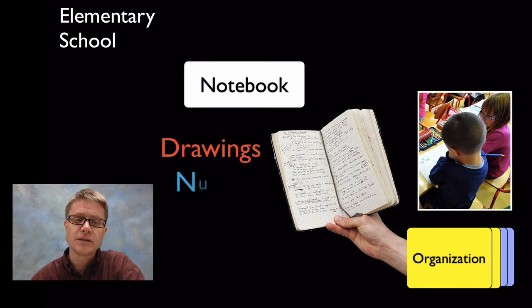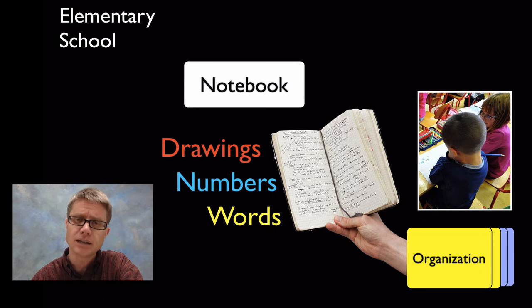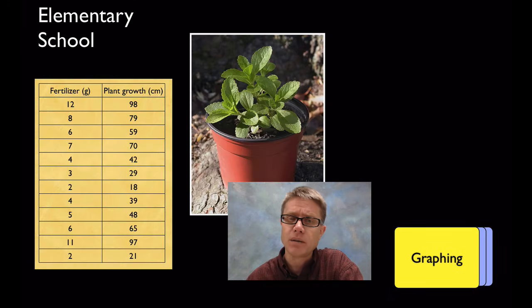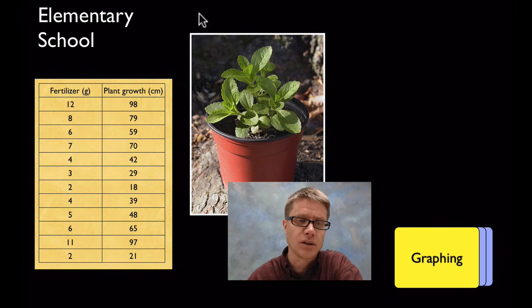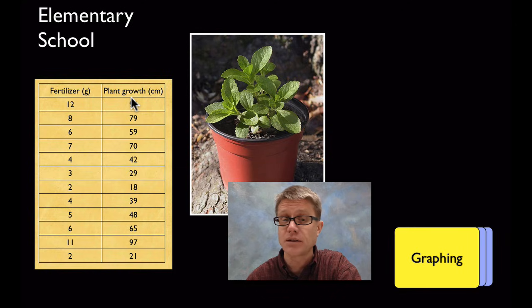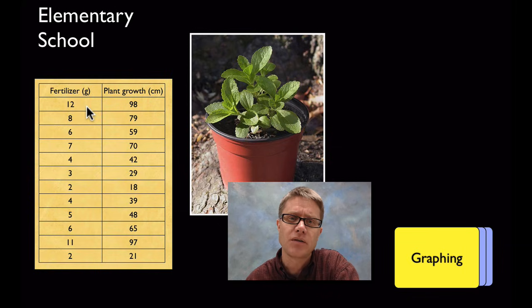That could be drawings, numbers, or words. But they should get into this idea that they're collecting data and they're going to have to do something with that data. As you move through elementary they should really get to the level of tables, organizing numbers and organizing data in a table. Let's say you're doing an experiment on fertilizer and how varying the amount of fertilizer affects plant growth. They should get the idea of using a table to organize that. It's really good practice to always put the thing that you're changing or the independent variable in the first column and then dependent variable in the second.